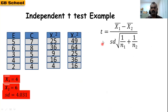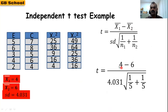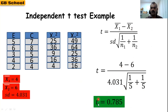Substituting into the t-test formula: t = (4 − 6) / (4.031 × √(1/5 + 1/5)), which gives a calculated t value of t = 0.785.